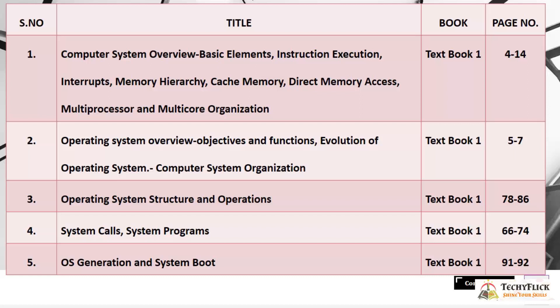Operating System Overview covers Objectives and Functions, Evolution of Operating System, and Computer System. This is covered on pages 5 to 7 in Textbook 1. The third topic is Operating System Structure and Operations, which is pages 78 to 86.